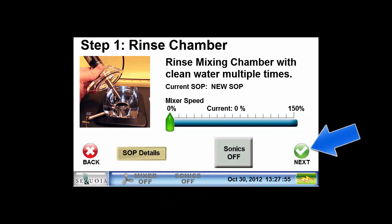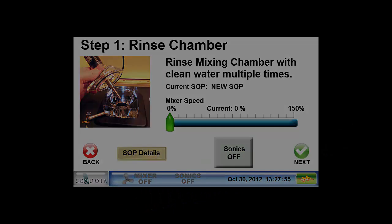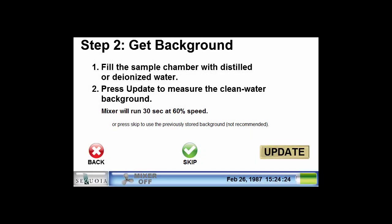Press the next button to continue to the get background step. In order to make a good measurement of the particles suspended in the mixing chamber, we need to make sure the optical windows are free of particles or bubbles. There will always be some light scattering from the window surfaces, and as the instrument is used, the light scattering can increase. So we record this background light scattering first, then subtract it from the total scattering measured with the particles in the chamber. This leaves just the scattering from the particles, which is then used to determine the size distribution.